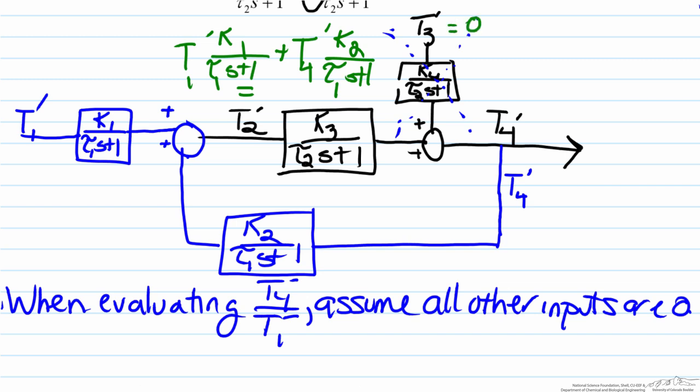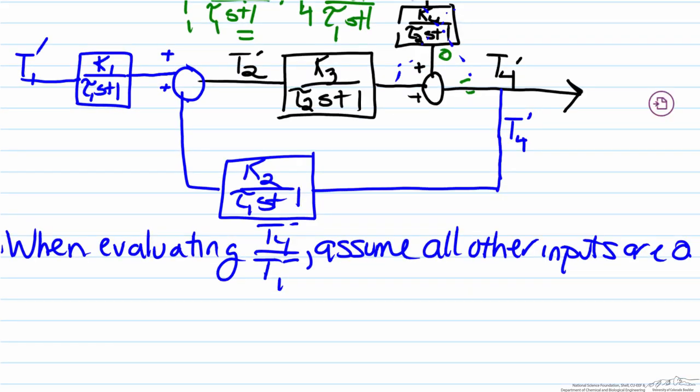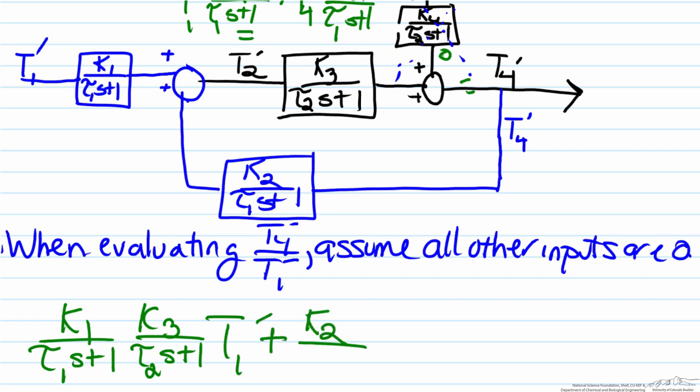that means that this value here is zero, so therefore when we send it through this block that will just equal T4. So what we will have is that k1 over tau1s plus 1 multiplied by k3 over tau2s plus 1 multiplied by T1 prime, plus k2 over tau1s plus 1 multiplied by T4 prime, and that will equal T4 prime.